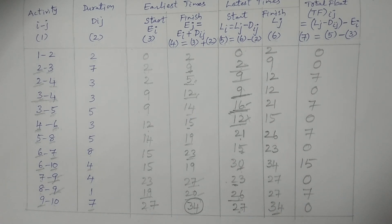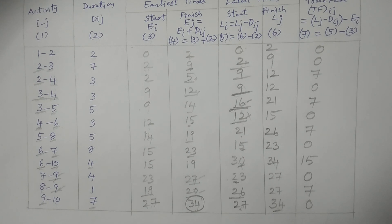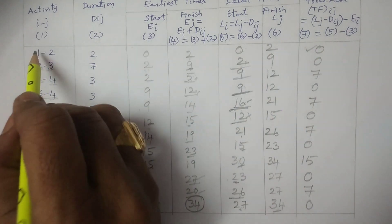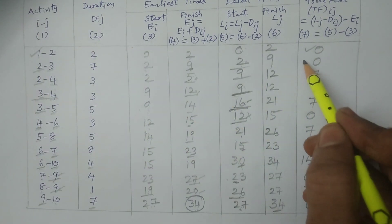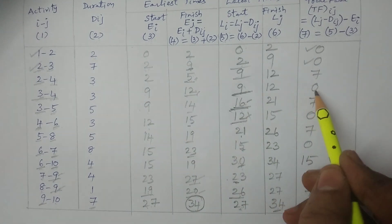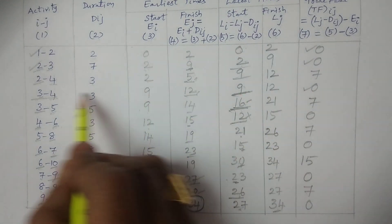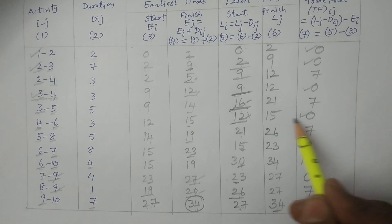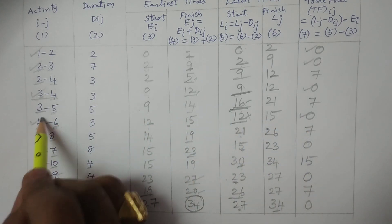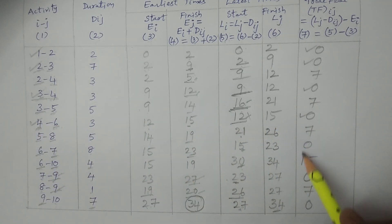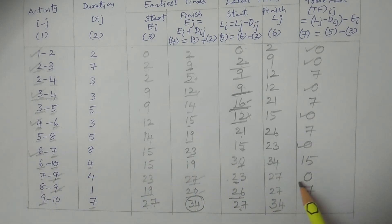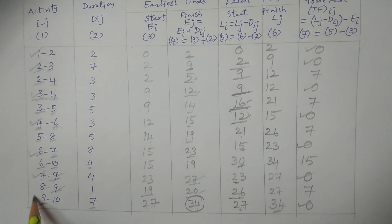Observe the zero values of total float. The corresponding activities are called critical activities. Zero total float corresponds to activities: 1 to 2, 2 to 3, 3 to 4, 4 to 6, 6 to 7, 7 to 9, and the last activity 9 to 10.